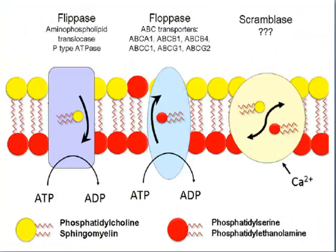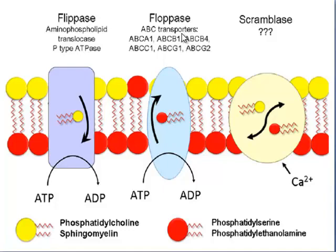In the next figure also you can see the same function. The flippase, or amino phospholipid translocase, for example P-type ATPase, requires ATP, which is converted to ADP. ATP for floppases also requires ATP, and ABC transporters are examples of floppases.